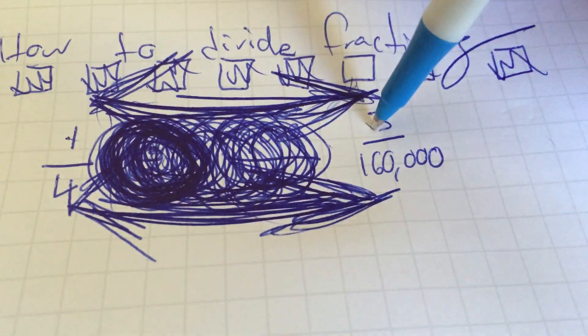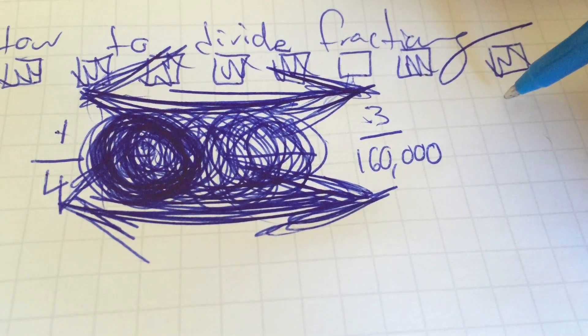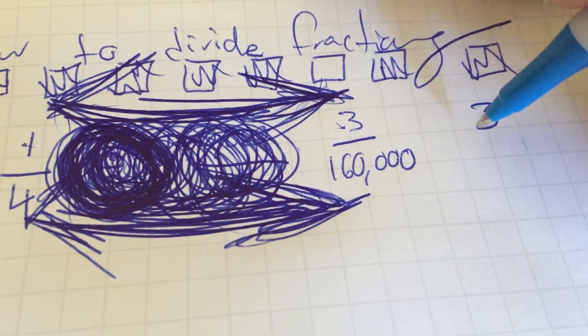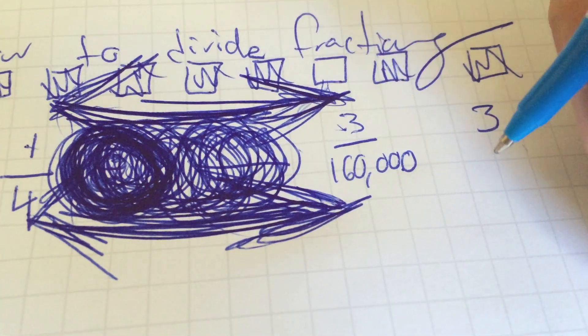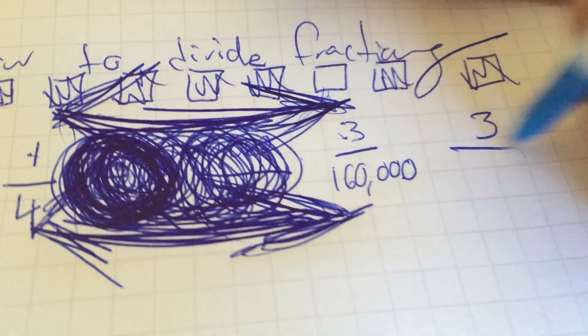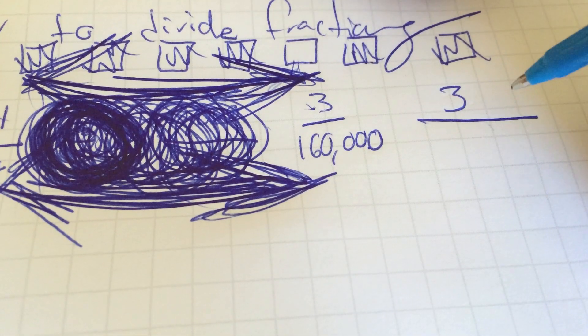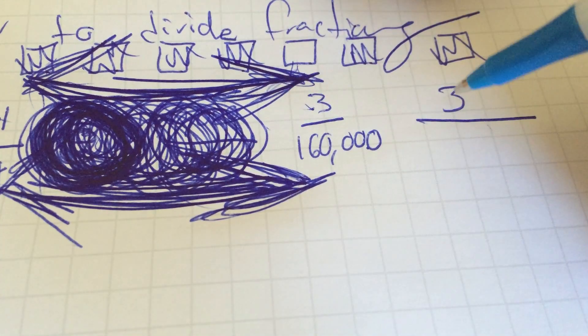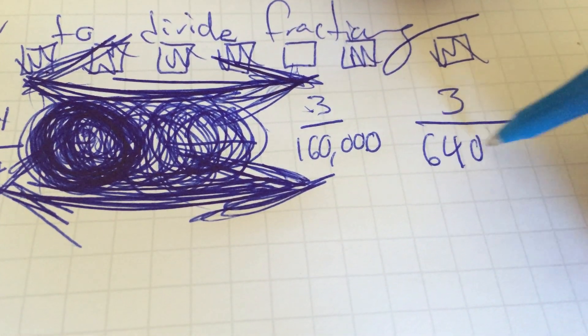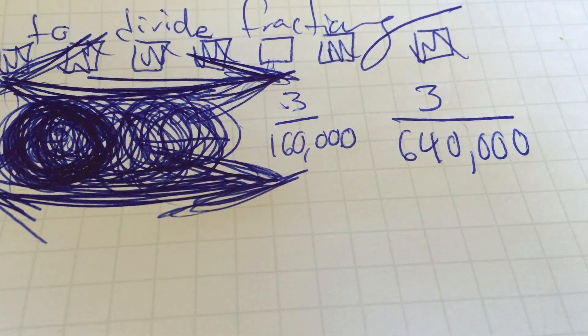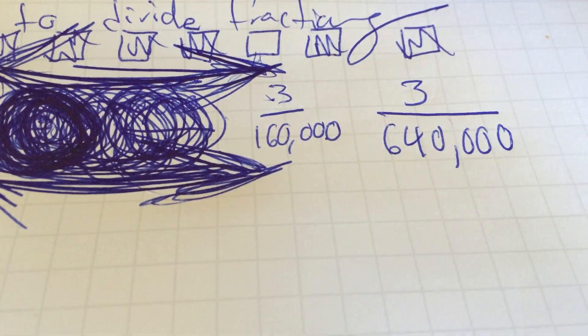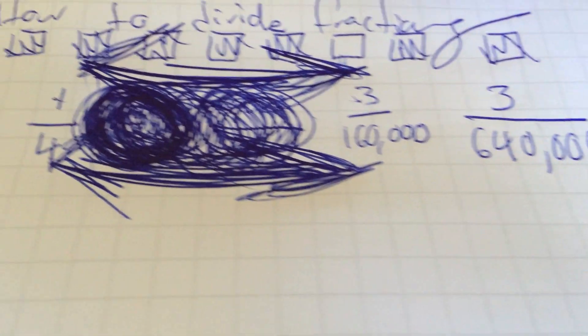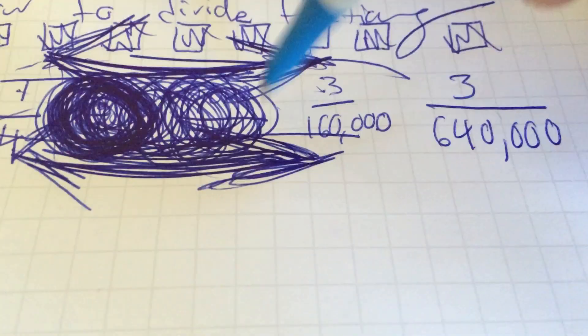So 1 times 3 is obviously 3. 4 times 160,000 is... Jesus. You carry the one. I'm doing this kind of in my head. 640,000. Oh wow, that's a lot of zeros, kind of totally unnecessary for a basic example. But you get the point - just vector straight across after creating a vortex.